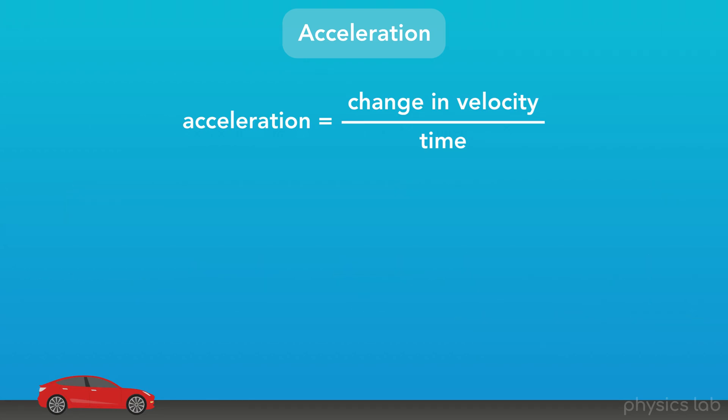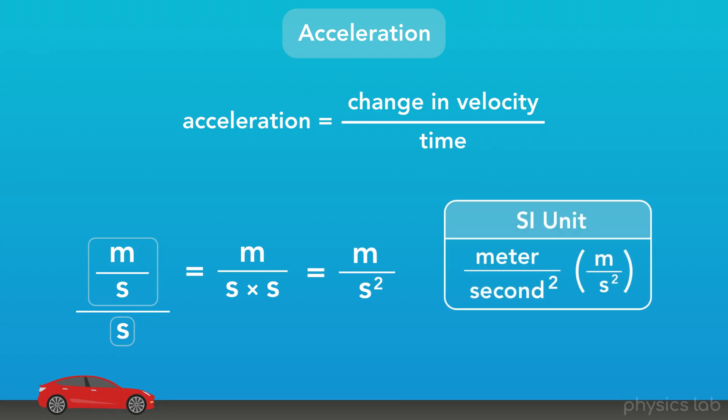So, what would the SI unit of acceleration be? Well, our SI unit of velocity is meters per second, and our SI unit of time is seconds. So, this unit would be meters per second per second. Mathematically, that's actually the same as meters divided by seconds times seconds, which is the same as meters divided by seconds squared. And that's our SI unit for acceleration, meters per second squared, abbreviated m over s squared.